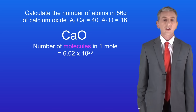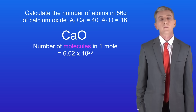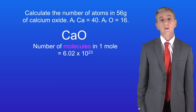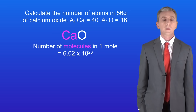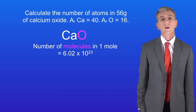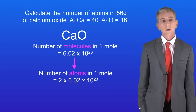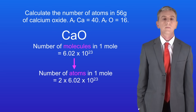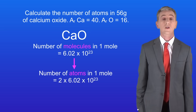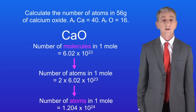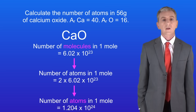But remember that the question is asking us to calculate the number of atoms, not the number of molecules. Each molecule of calcium oxide contains two atoms: one atom of calcium and one atom of oxygen. So we need to multiply the number of molecules by two to get the total number of atoms. The total number of atoms in 56 grams of calcium oxide is 1.204 times 10 to the power of 24, and that's our final answer.